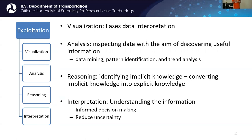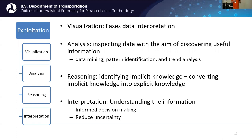Visualization eases data interpretation. If a picture is worth a thousand words, a map is worth a million — putting it all together really helps us understand. AI is getting better, but it's really easy for the mind to comprehend things once they're visualized. Analysis involves inspecting the data to make it more useful — mining patterns from the data. Reasoning is identifying implicit knowledge and converting it into explicit knowledge; GIS is really great at that. Interpretation means understanding the information and transforming it into knowledge, which informs decision-making and reduces uncertainty.